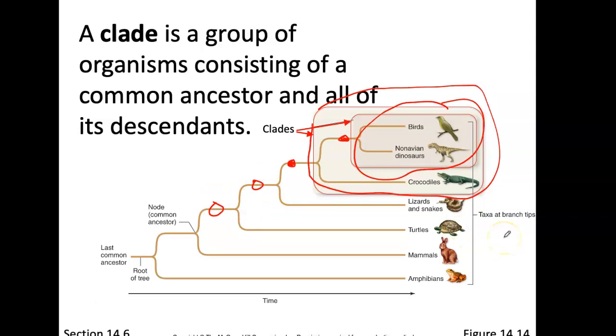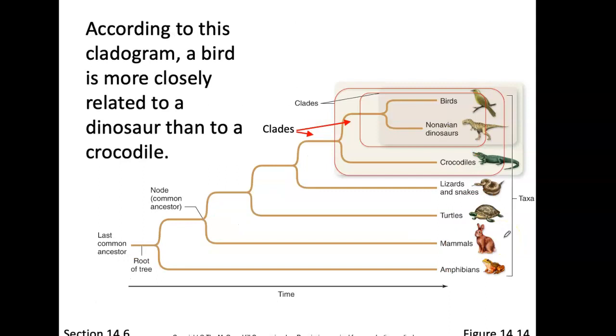According to this cladogram, a bird is more closely related to a dinosaur than it is to a crocodile.